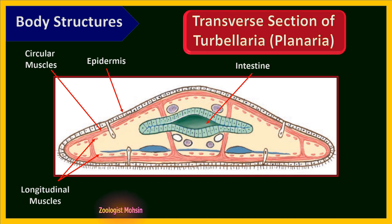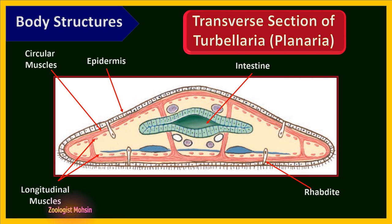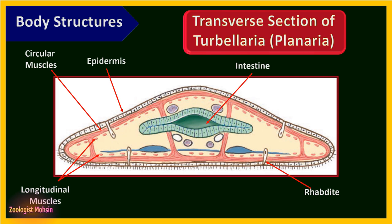The gastrodermis has a single layer of cells that secretes enzymes aiding digestion and absorption of digested food. On the ventral side, glandular cells called rhabdites are rod-like and secrete mucus around the body for protection when danger is present. Adhesive and releaser glands on the ventral side are used to attach and detach the body from substrate through secretions.